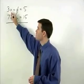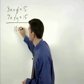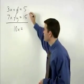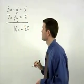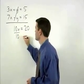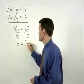On the left, 3x plus 7x is 10x, and on the right, 5 plus 15 is 20. Dividing both sides by 10, x equals 2.